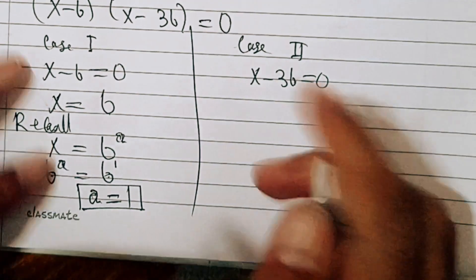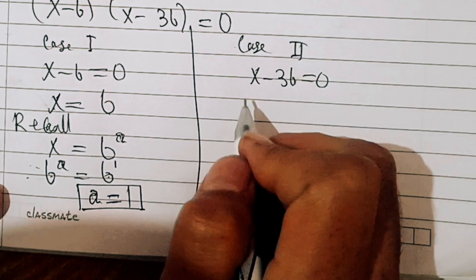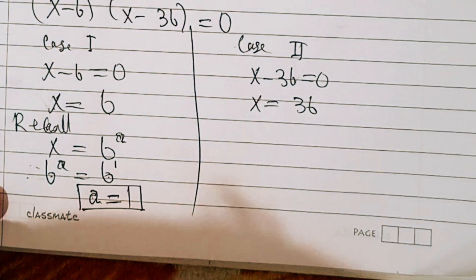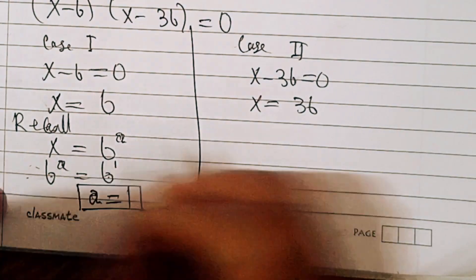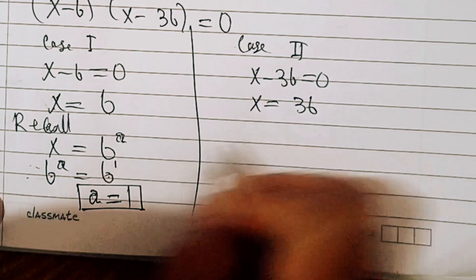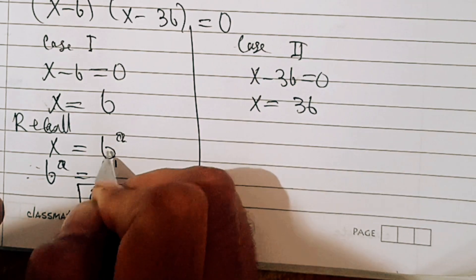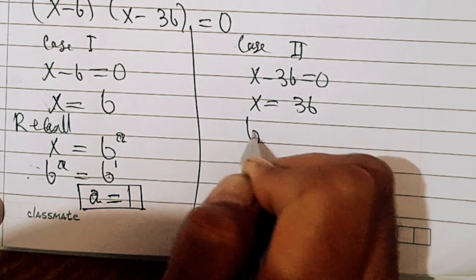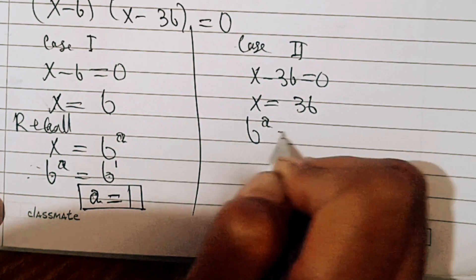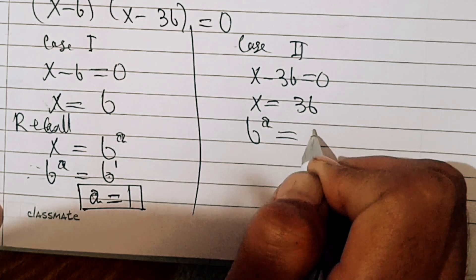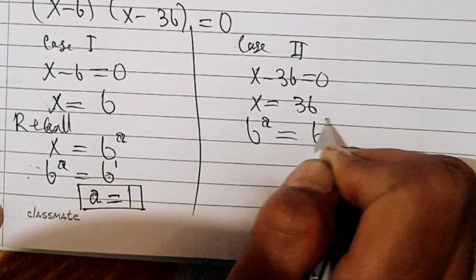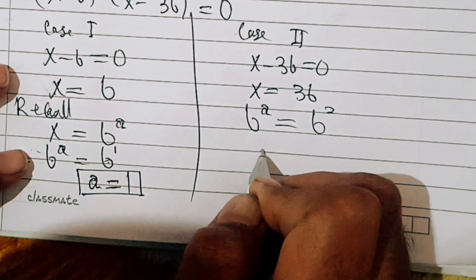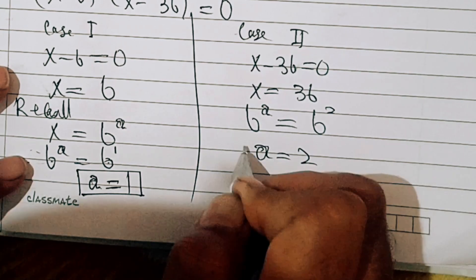In case two, x minus 36 equals 0, so x equals 36. Since x equals 6 power a, we have 6 power a equals 36, which is 6 squared. So that means a equals 2.